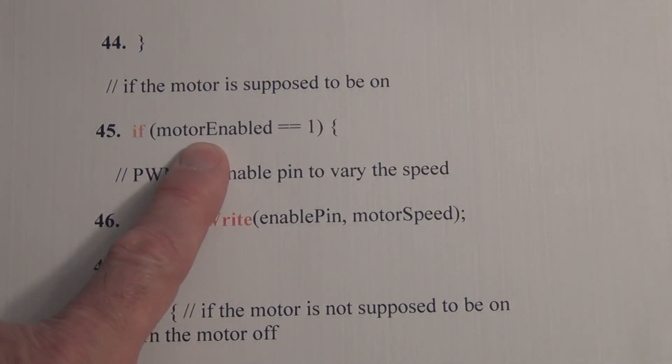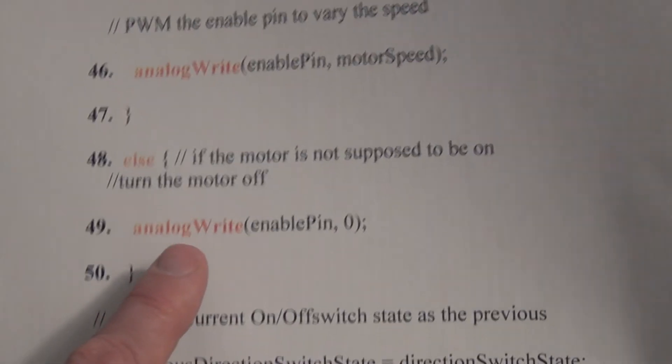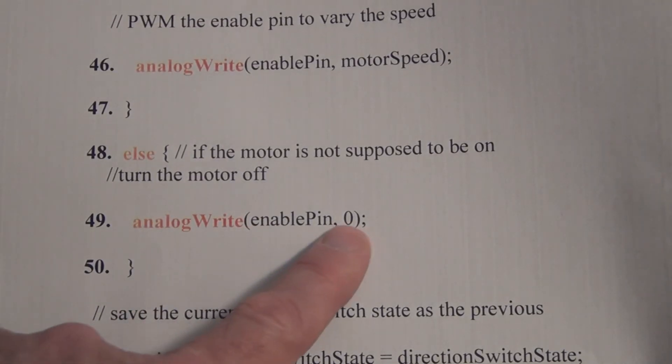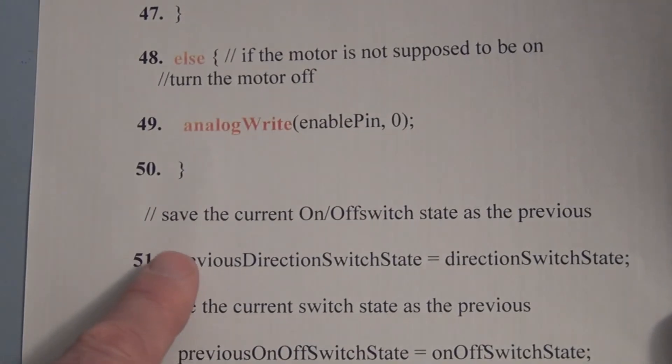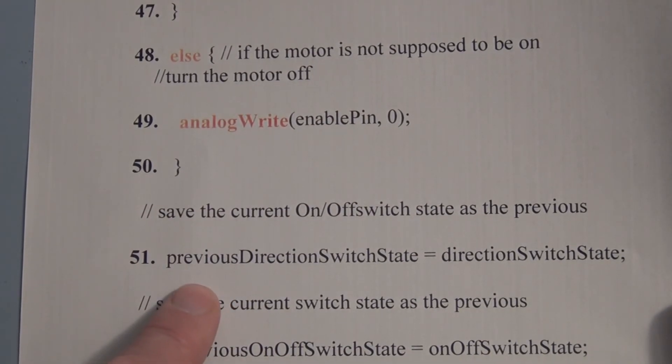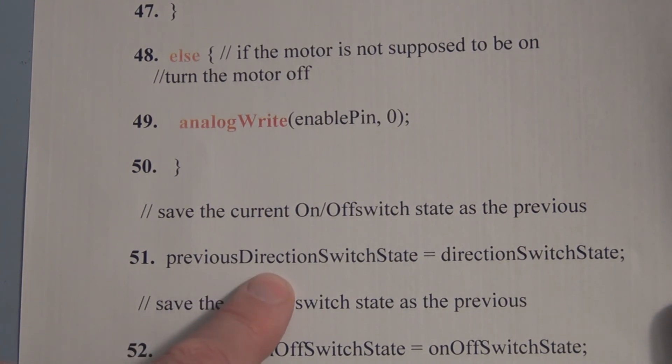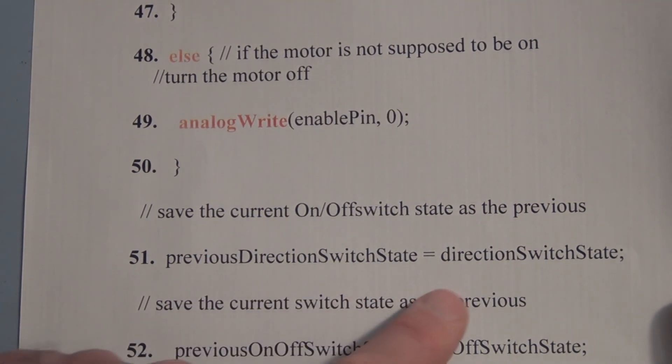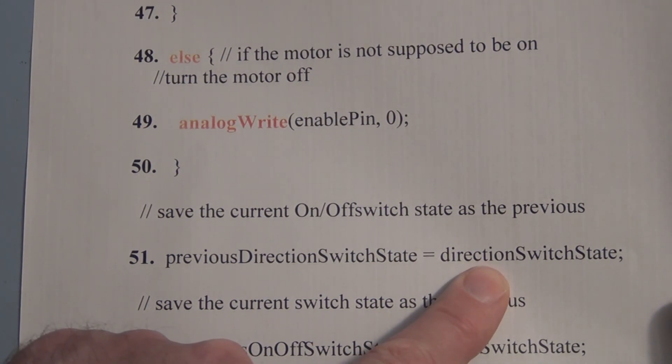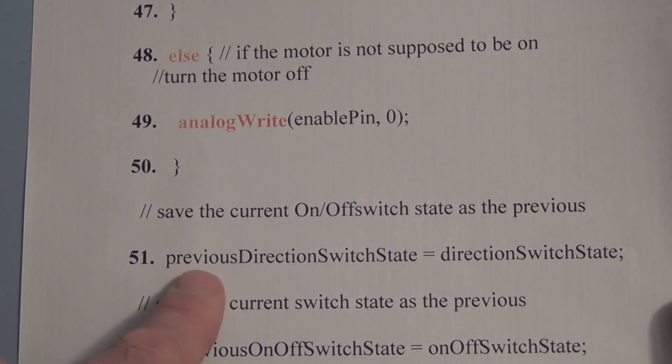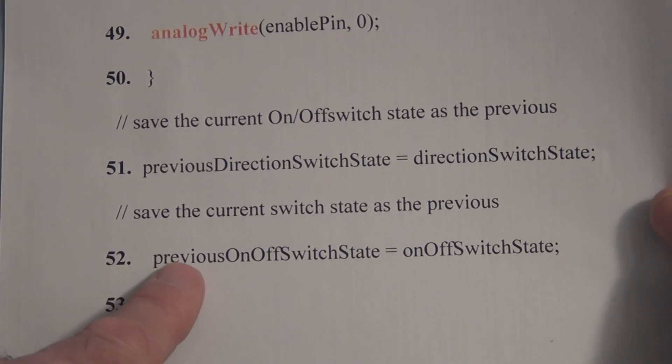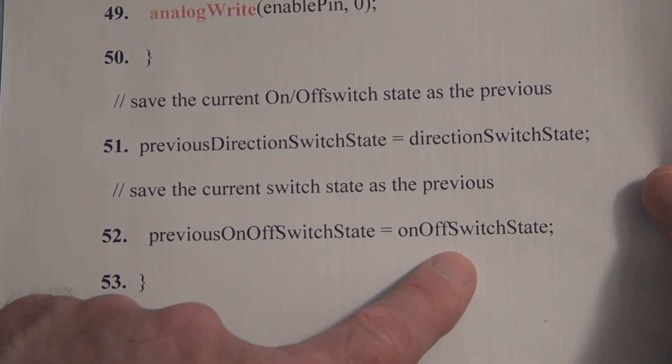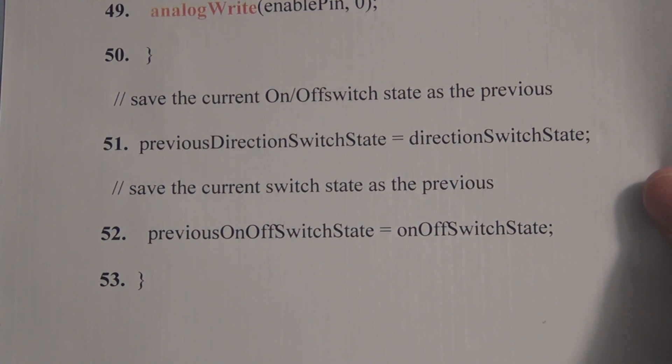If that pin is not enabled then the motor is off so if the motor is off we just do an analog write with the value zero with no pulse width modulation and last we have to reinitialize all the previous states equal to the current state so the current state becomes the new previous state and that applies for previous direction switch state and also previous on off switch state and that's the program. So I hope you found this experiment informative and interesting please subscribe and or comment and thanks for watching.